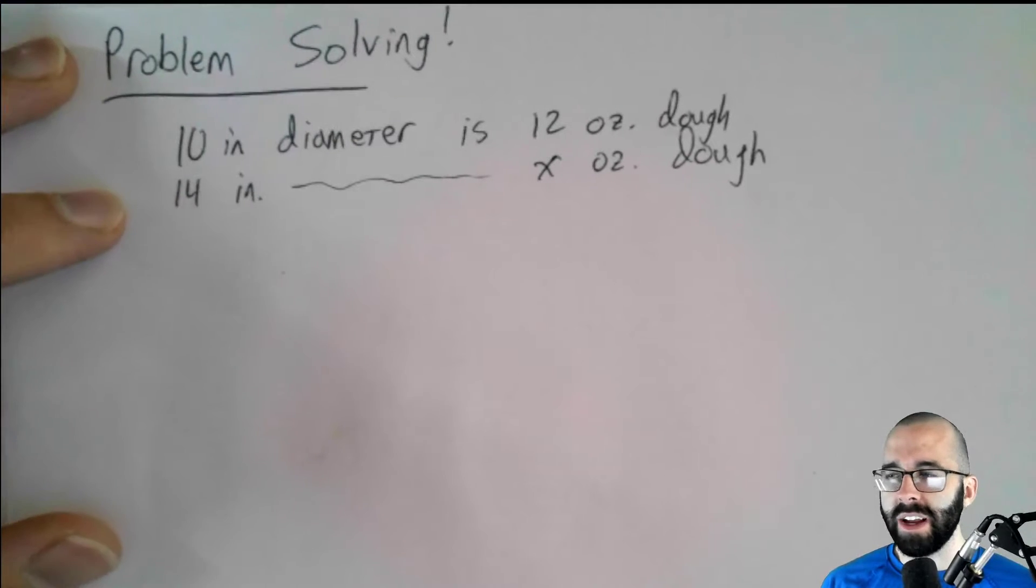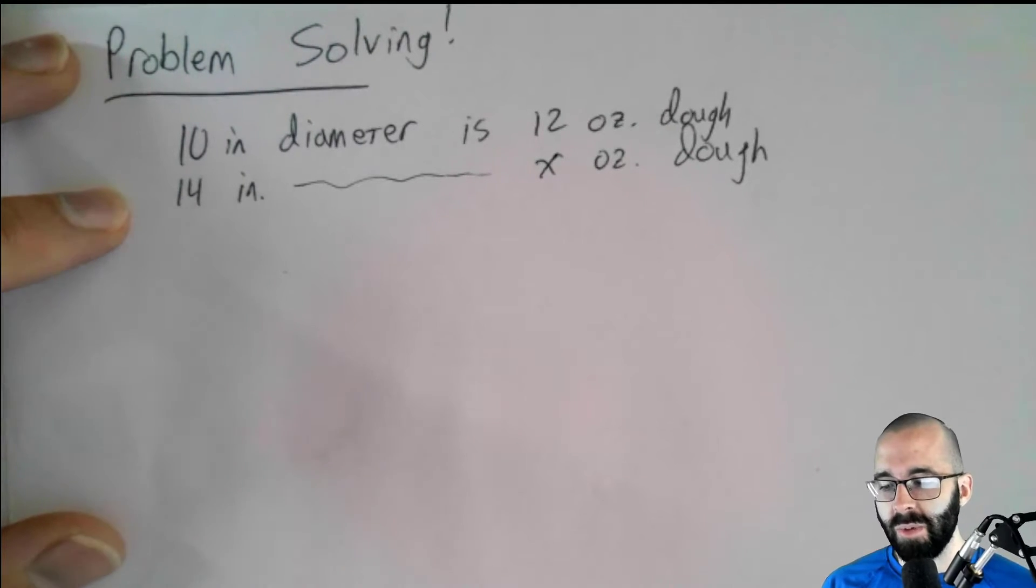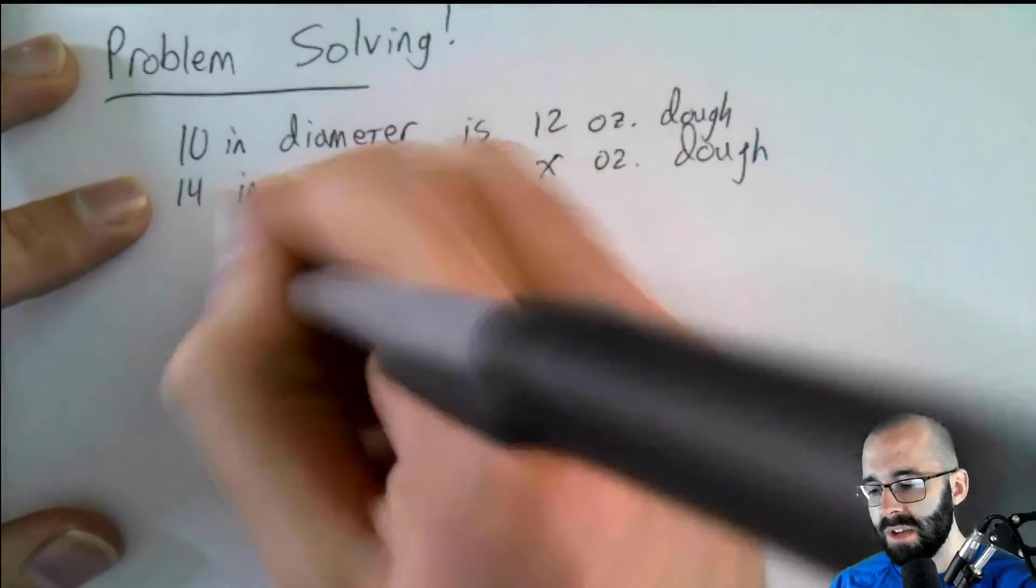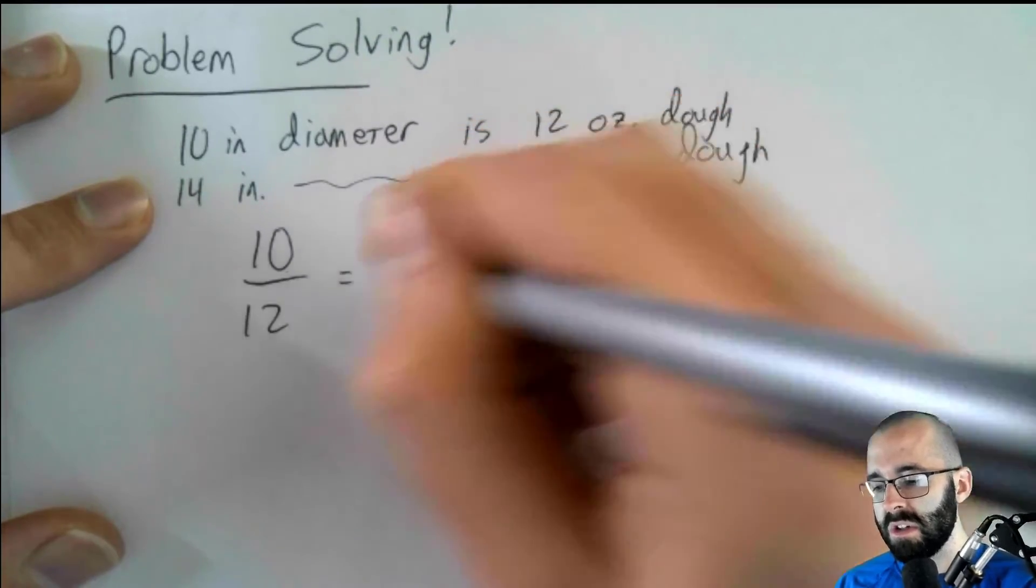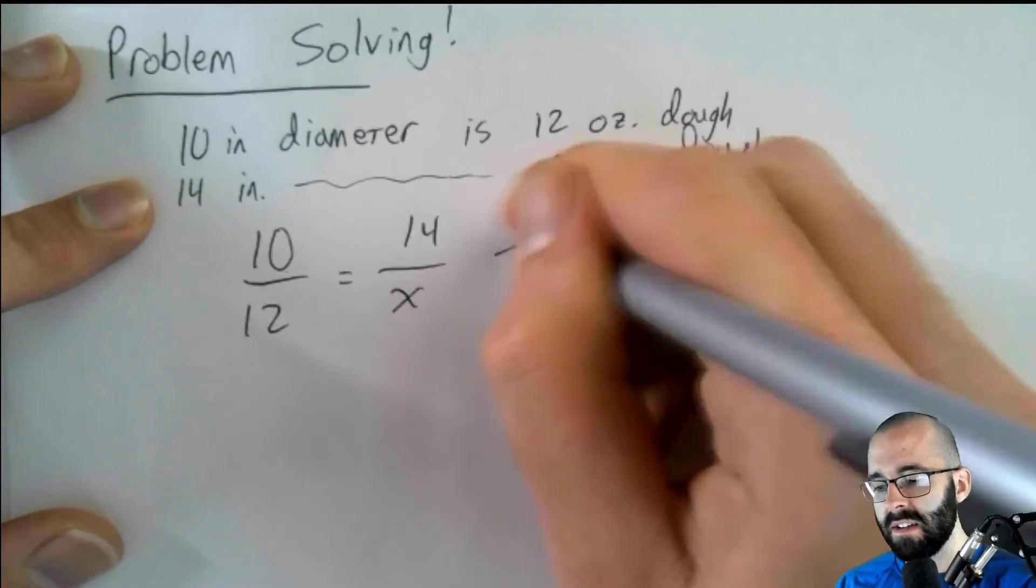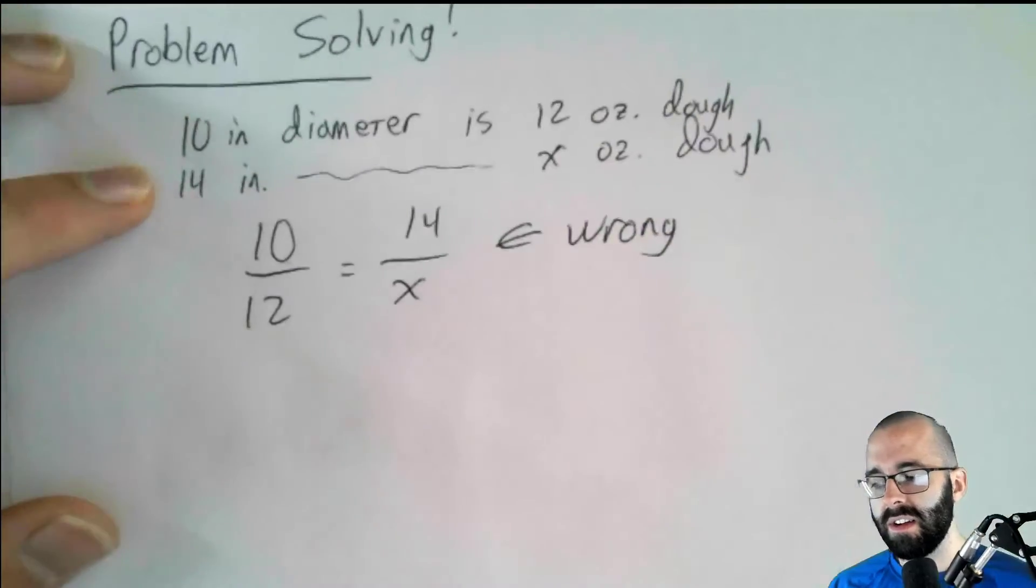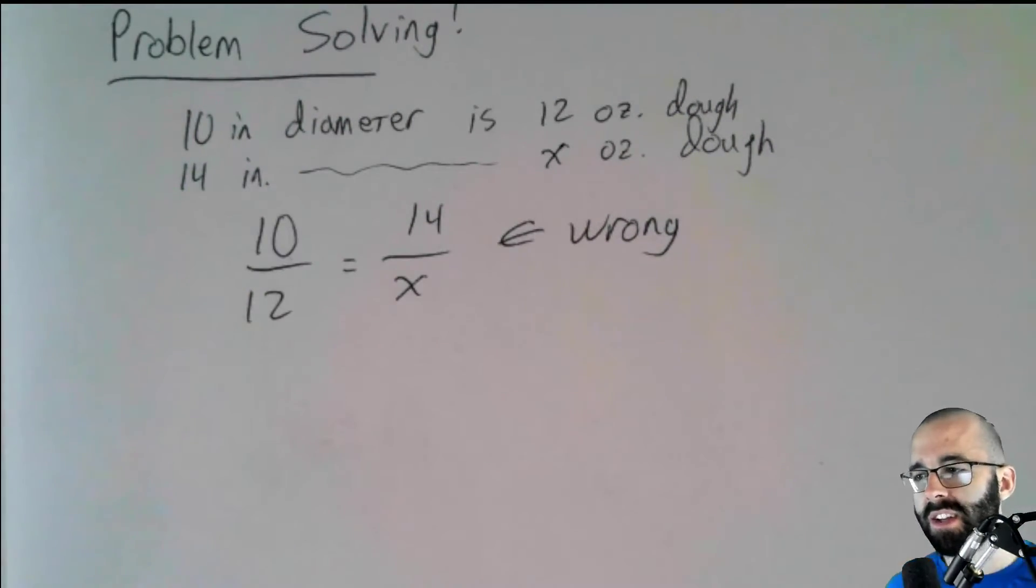But after this, I'm going to write down the wrong thing, and I want you to think about why this is wrong. All right, so 10 is to 12, the same way as 14 is to X. I'll tell you, this is wrong. So take a moment, maybe pause the video, but I'll give some time as well, and think about what is incorrect about this.